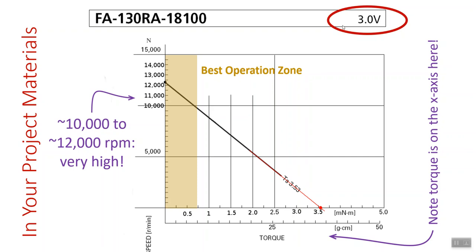So somewhere between 10,000 to 12,000 RPM — which is very high — is almost certainly too high for what you're doing in your climbing robot project. I've also circled that this is at three volts. The rating is sometimes you might be able to go a little bit more on the voltage, but you've got to be careful that you don't overheat it. The more you keep it within the best operating zone, the more you might be able to get away with a little bit higher voltage because of the heat loading. But in any event, this is for three volts. The torque here is on the horizontal axis.